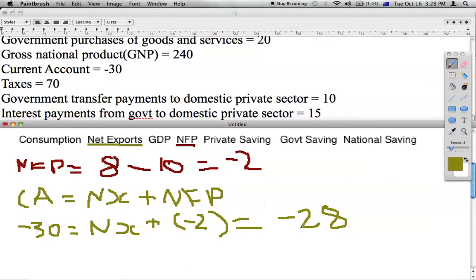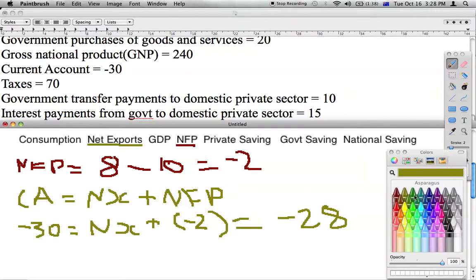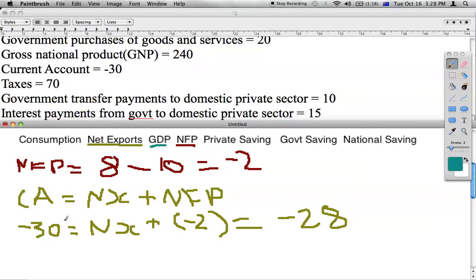There's our net exports as minus 28. Alright, the next one I would solve would be GDP. And this is because we're given gross national product and we have figured out our net factor payments to be minus 2. This is all we need to figure out GDP. Because GDP equals GNP minus our net factor payments.